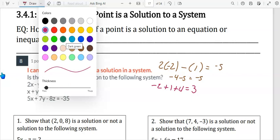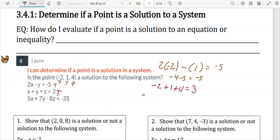And then let's check the last equation. 5 times negative 2 plus 7 times 1 minus 8 times 4 equals negative 35. Negative 49 does not equal negative 35, so this is false.